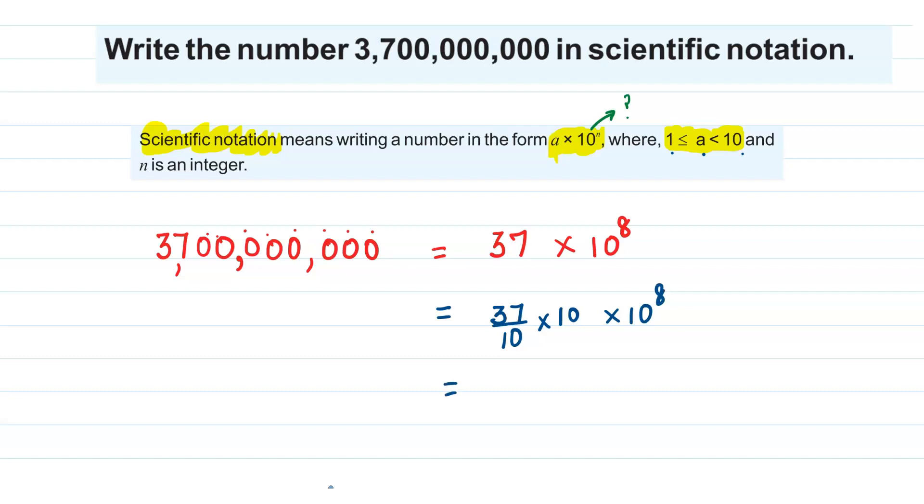This still remains 37 because we are dividing by 10 and multiplying by 10. So what do we get? We get 3.7 × 10^1 and 10^8.